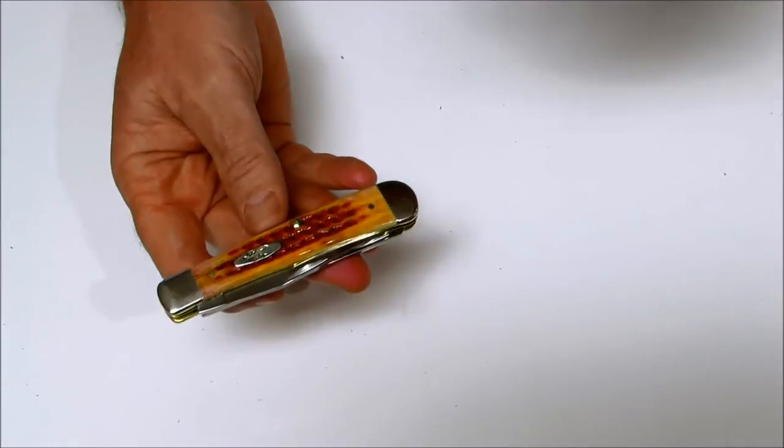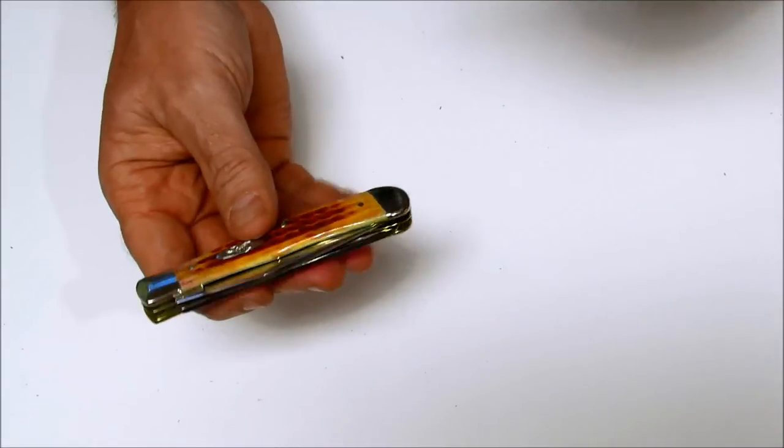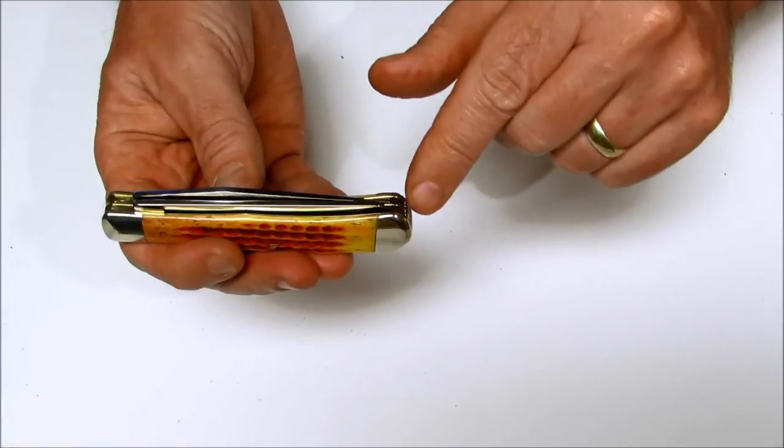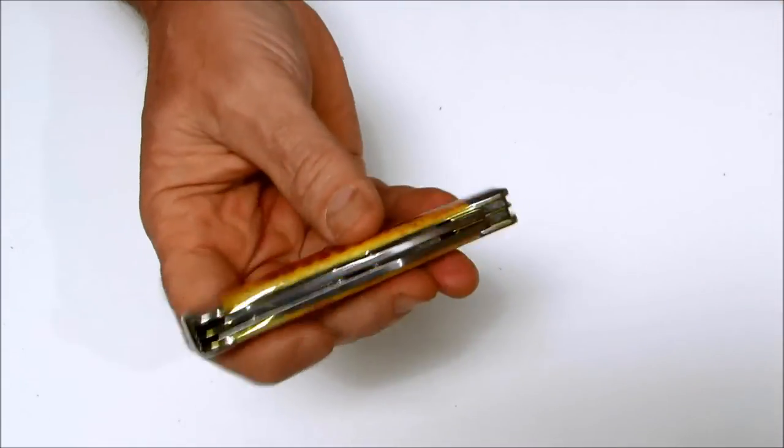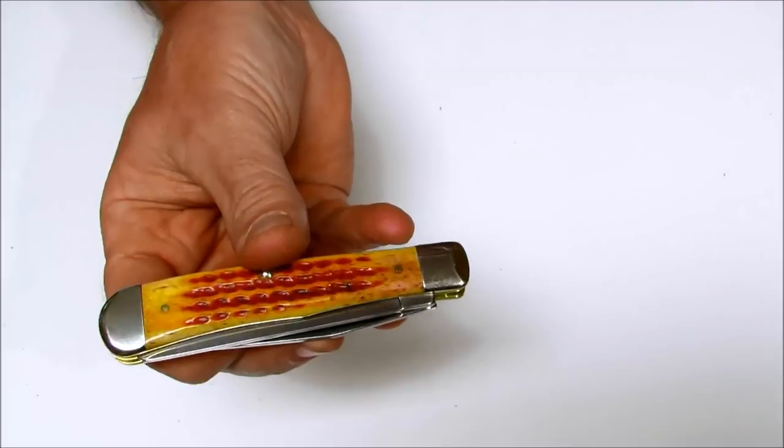The weight is 4 ounces. Bolsters are nickel silver. The liners are brass. Here you can see the brass liners in there and these are entirely handcrafted in the USA.